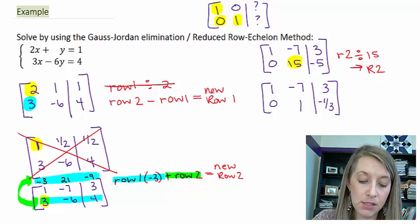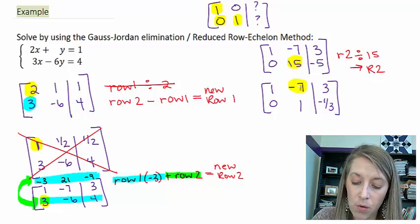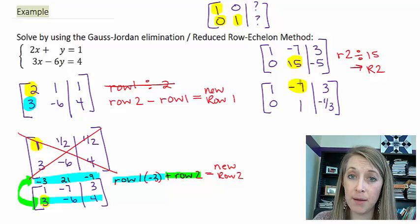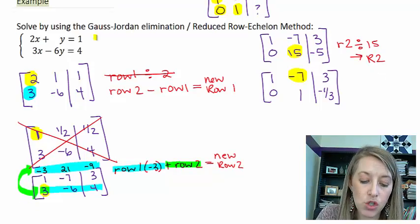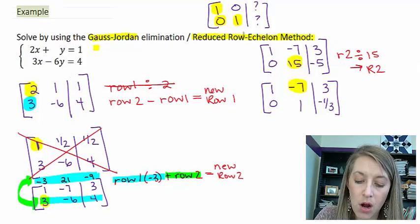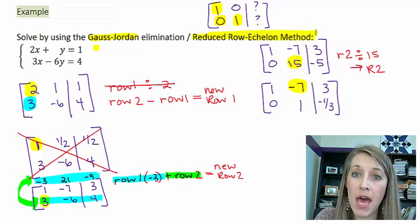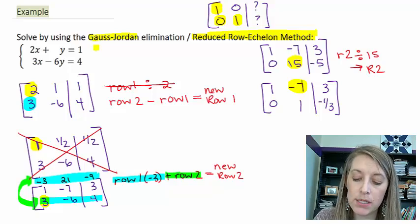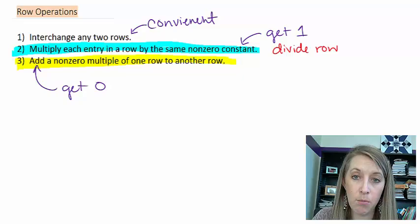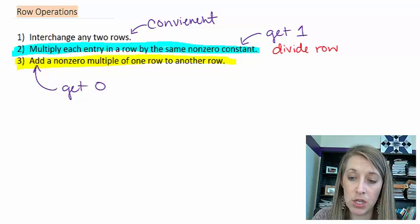My very last step is to get a 0 where this negative 7 is. That's the difference between my last example, the Gaussian elimination. I stopped there. Now with the Gauss-Jordan elimination or with the RREF method, we want to go ahead and finish this out. So I want to get rid of this negative 7. Whenever I want to get a 0, I multiply a different row by something to cancel it out.